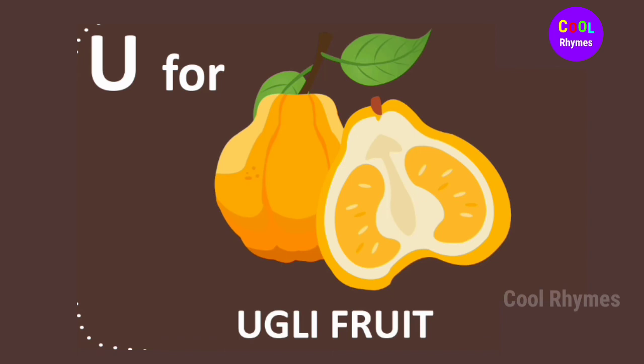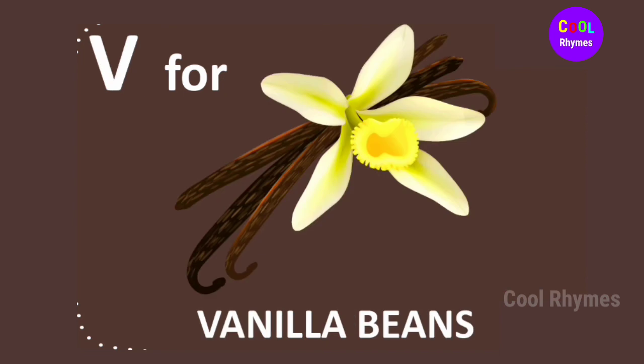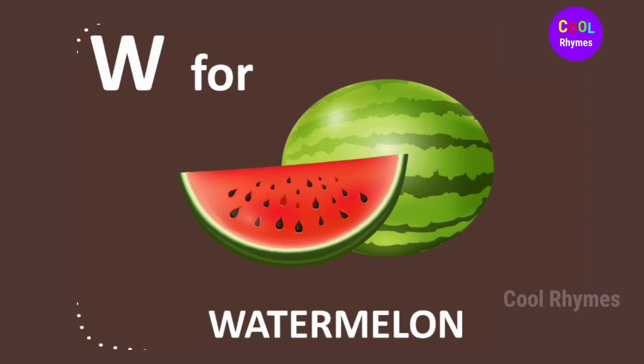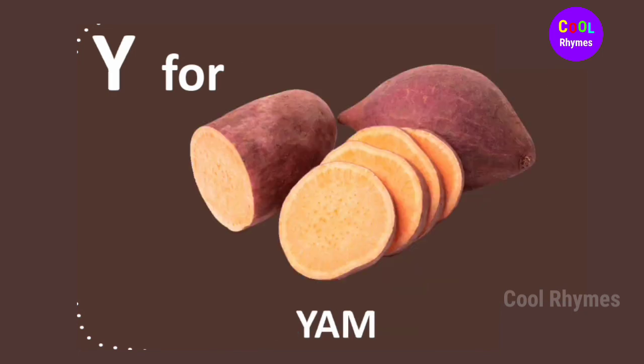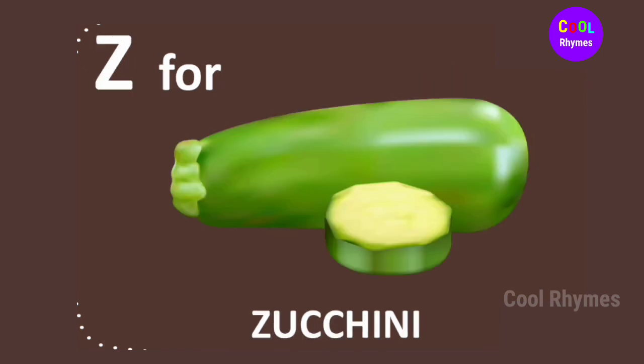U for ugly fruit, V for vanilla beans, W for watermelon, X for ximenia, Y for yam, Z for zucchini.